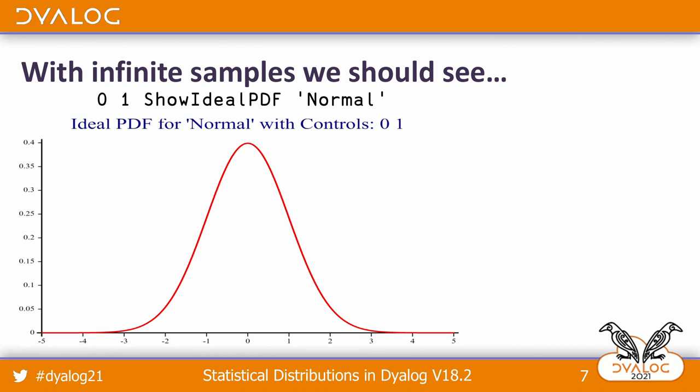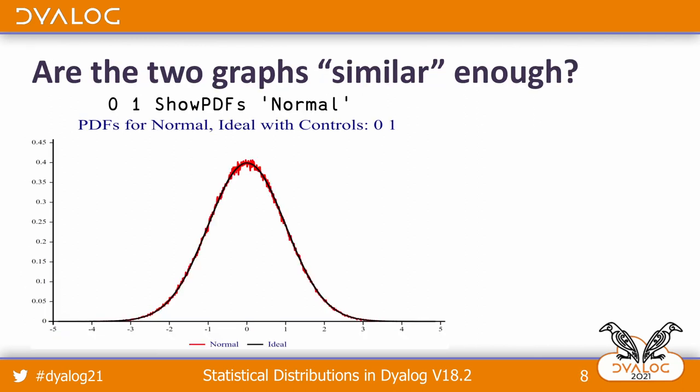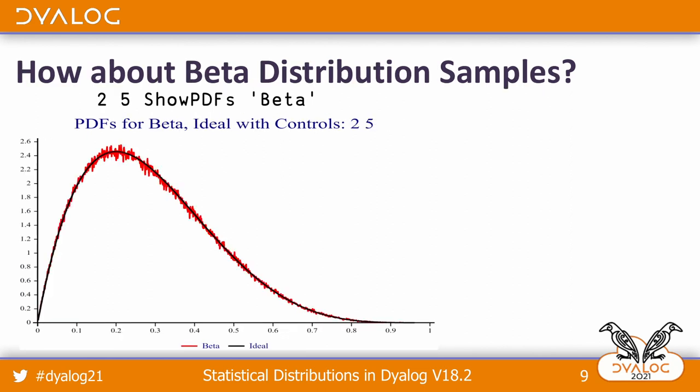To compare the two, let's overlay them. The black line is the ideal case and the red lines are what we actually got for our samples. So the question is: are these graphs similar enough to say that we're okay? What about the beta distribution, which seems to be a little more dramatically fuzzy?